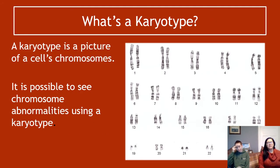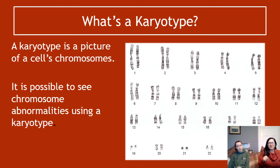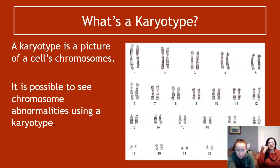A karyotype is a picture of a cell's chromosomes — this picture on this slide is a karyotype. What we're hiding with the image box is the X or Y chromosome option. On this particular karyotype it gives options for both — so this person would be either XX, indicating a girl, or XY, indicating a boy.